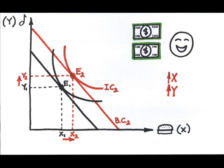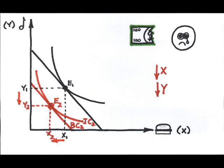Scenario 2. You lose your job. What's the result? With less income, the consumer is forced to consume less of both products and is now at a lower level of utility.